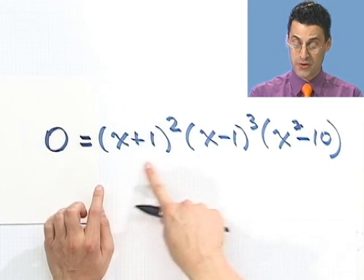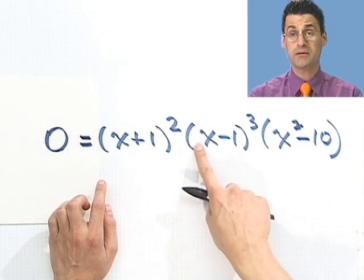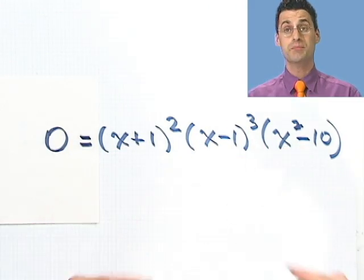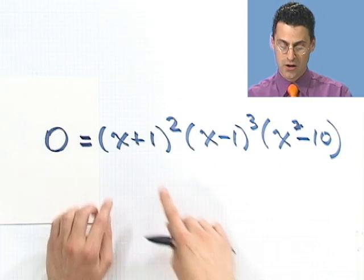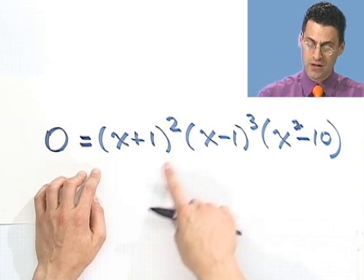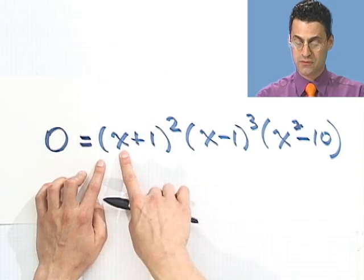If I set it equal to zero, well, either this term equals zero, or that term equals zero, or that term equals zero, because I have a product of numbers giving zero. Well, if this term equals zero, the only way that can happen is if x equals negative 1.